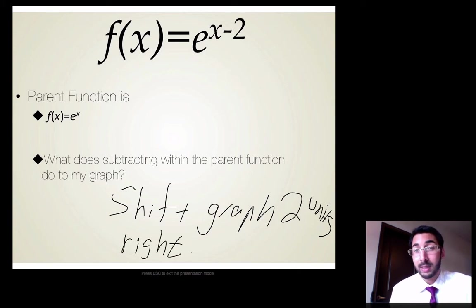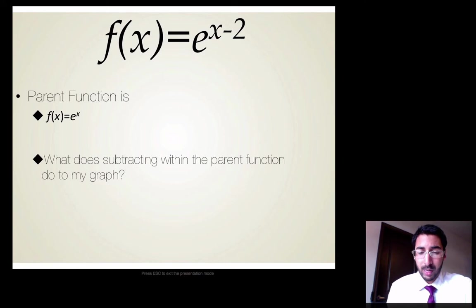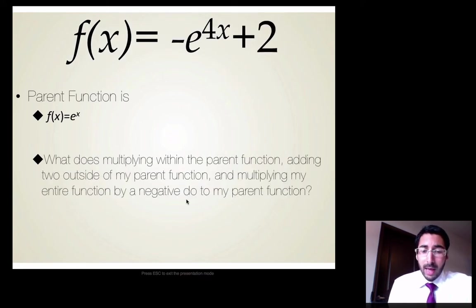And as you guys probably already guessed it, 2 units to the right. So the same rule applies here for normal function values and exponential functions when we're talking about shifting. So let's look at a bit more challenging one. I have negative E to the 4x plus 2. Now, you may want to pause the video and try figuring out the transformations that are happening here or the translations. I'm just going to tell you I see 3.